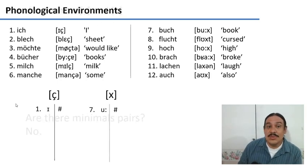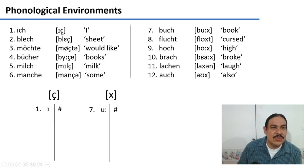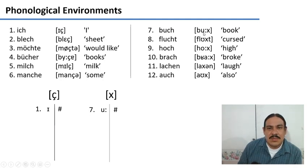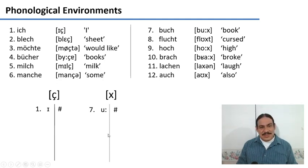So, once we've looked for minimal pairs and we don't find any, the next thing we need to do is to figure out which environments they occur in. Where do we find the palatal fricative and where do we find the velar fricative? In example number one, ich, you find the palatal one preceded by the vowel I and followed by the edge of a word. In example number seven, buch, we have the velar one, preceded by a long U and followed by the edge of the word. Please go through all of the data points and extract every environment where you see the palatal fricative and every environment where you see the velar fricative, and try to fill this out. Please pause the video.